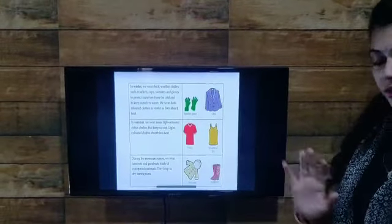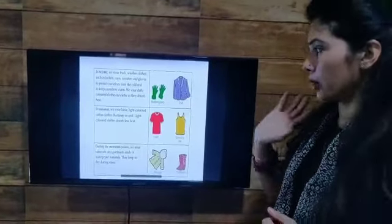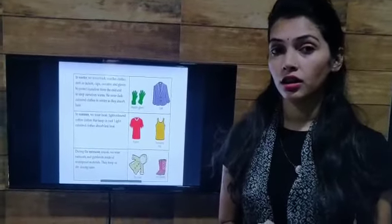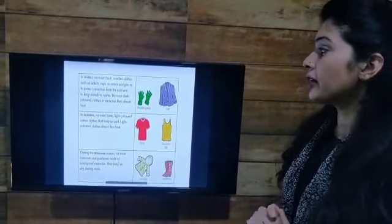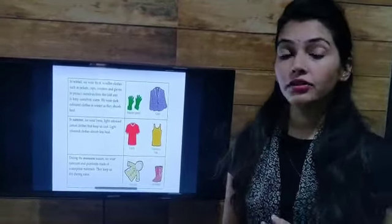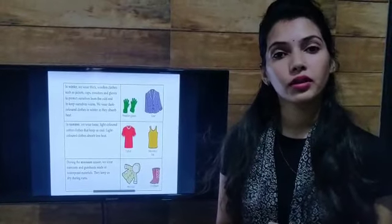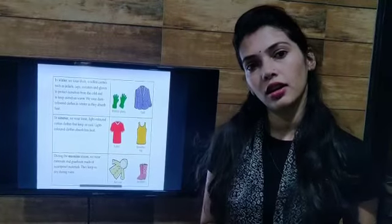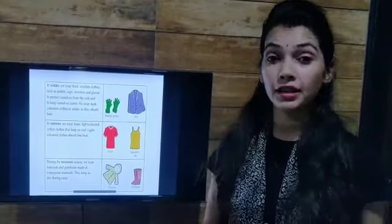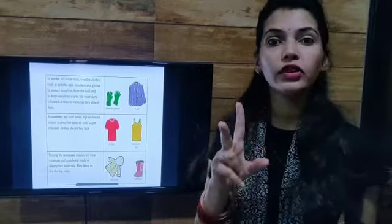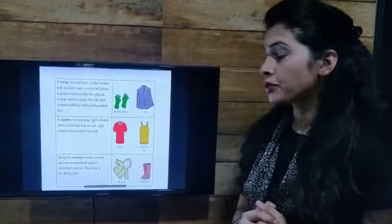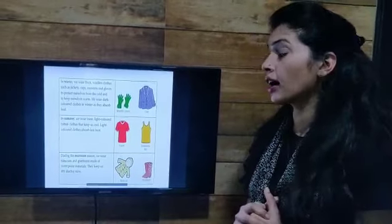You can see pictures of different clothes. The first is gloves and a coat — we wear these in the winter season. In winter we wear thick woolen clothes such as jackets, caps, gloves, and sweaters to protect ourselves from the cold and to keep us warm. We also wear dark colored clothes in winter because dark colors absorb heat.